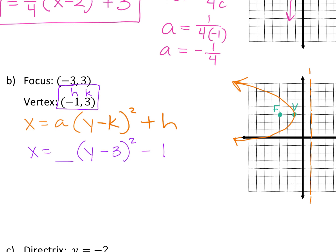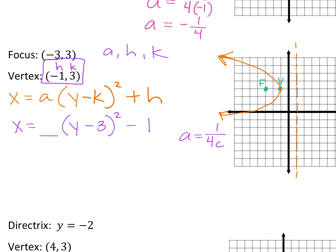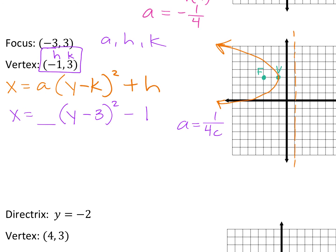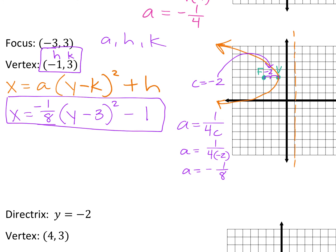We need A. A equals 1 over 4 times C. What is your C value? Negative 2 — the distance from vertex to focus. So C is negative 2. That means A is 1 over 4 times negative 2 — a is negative one-eighth. So that's going to go there, and that is your equation.